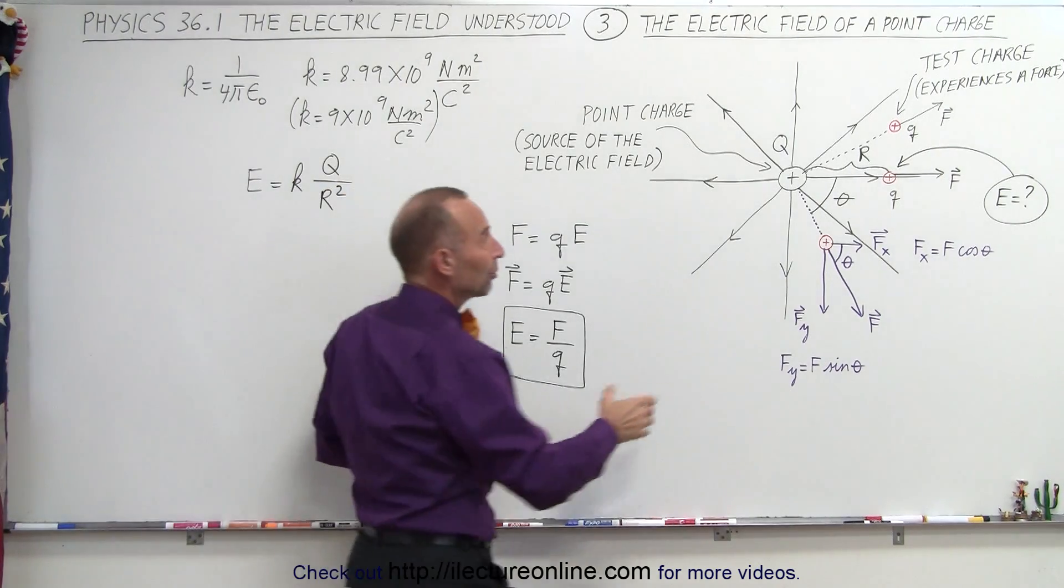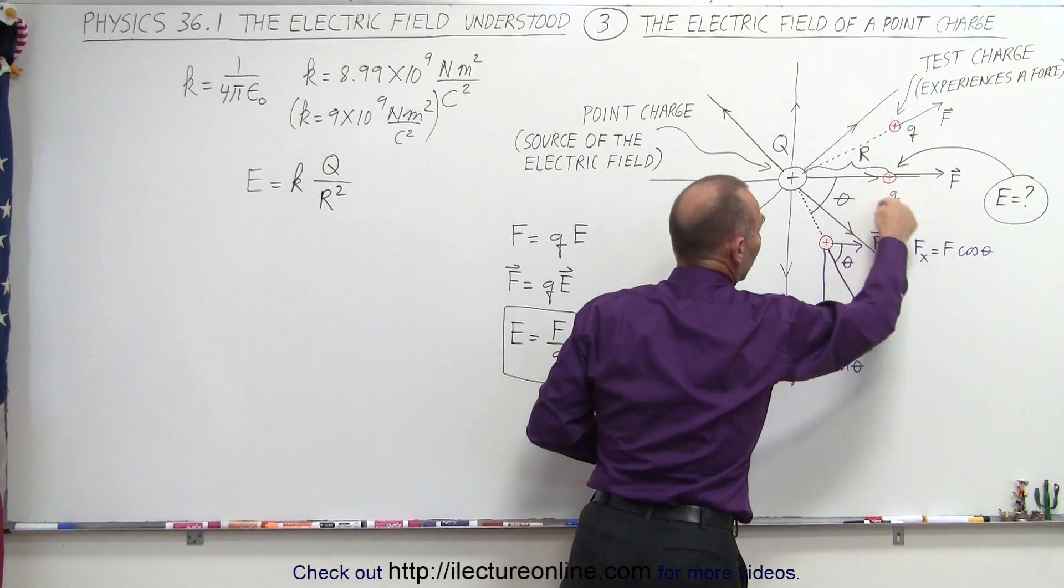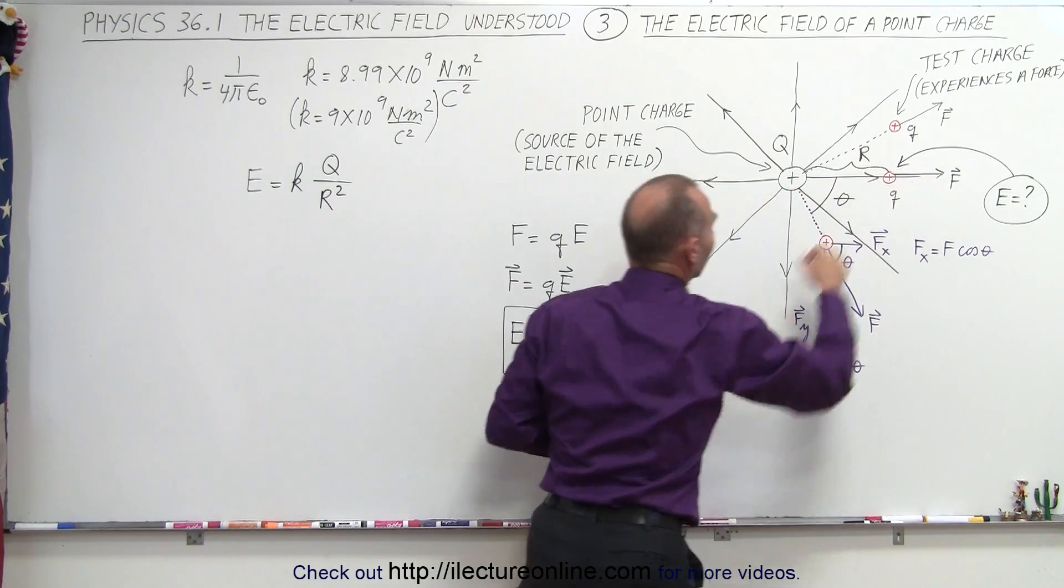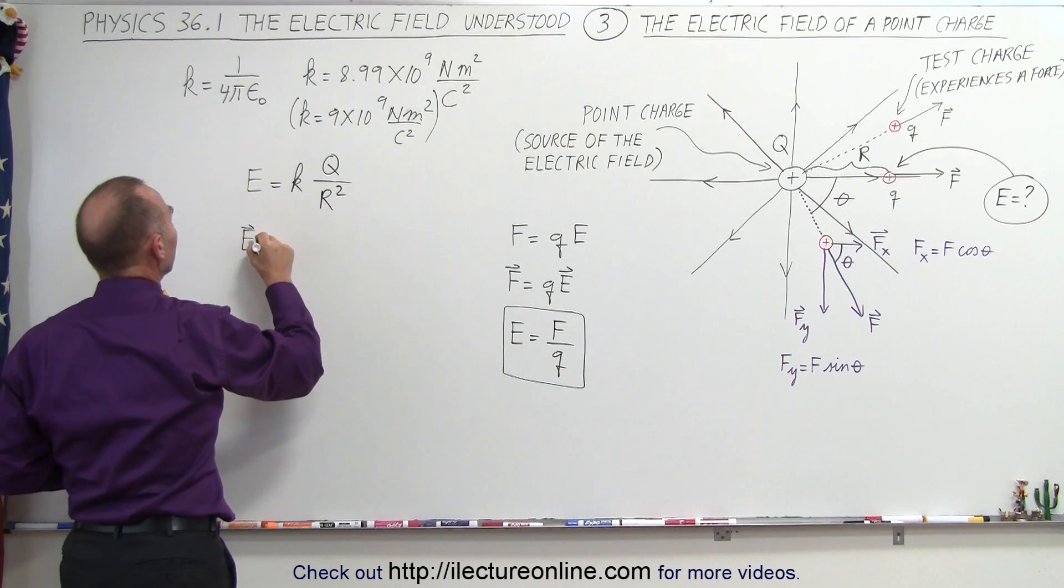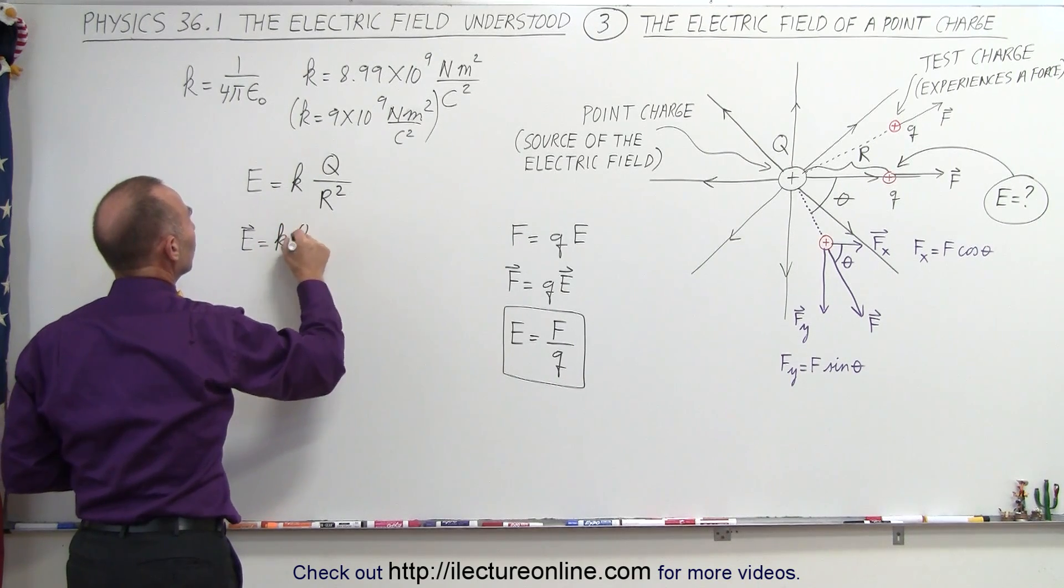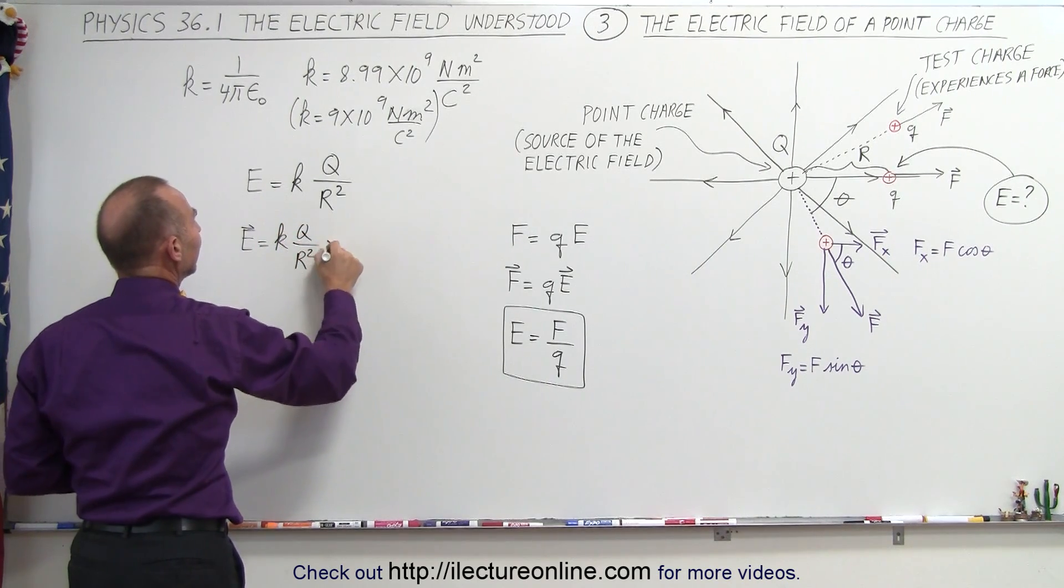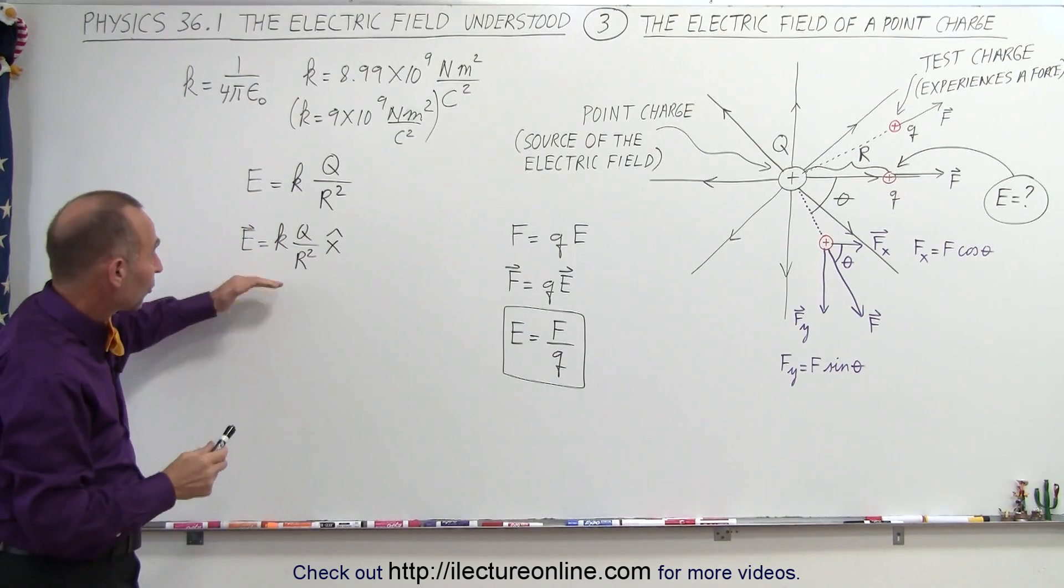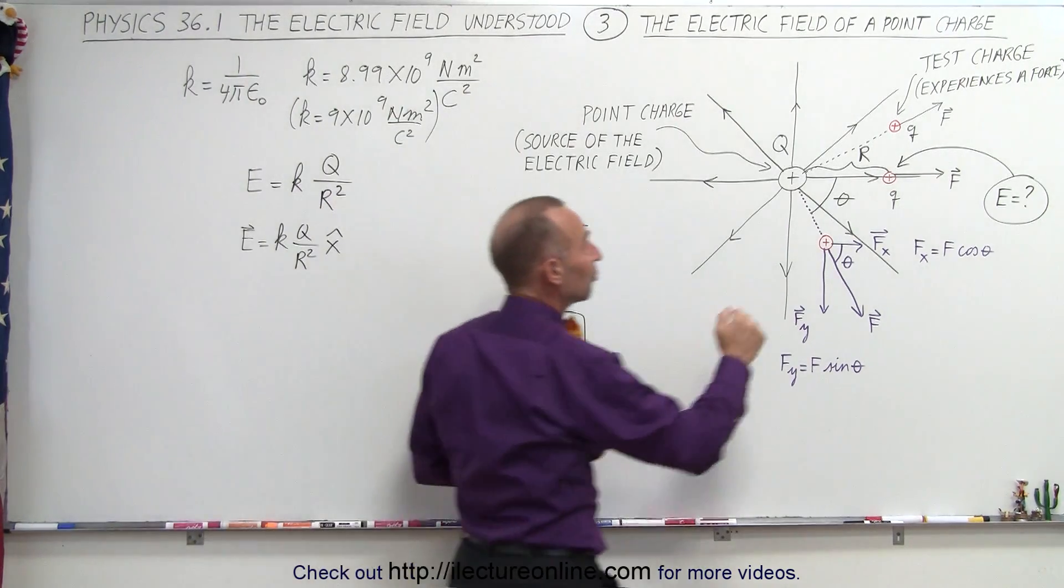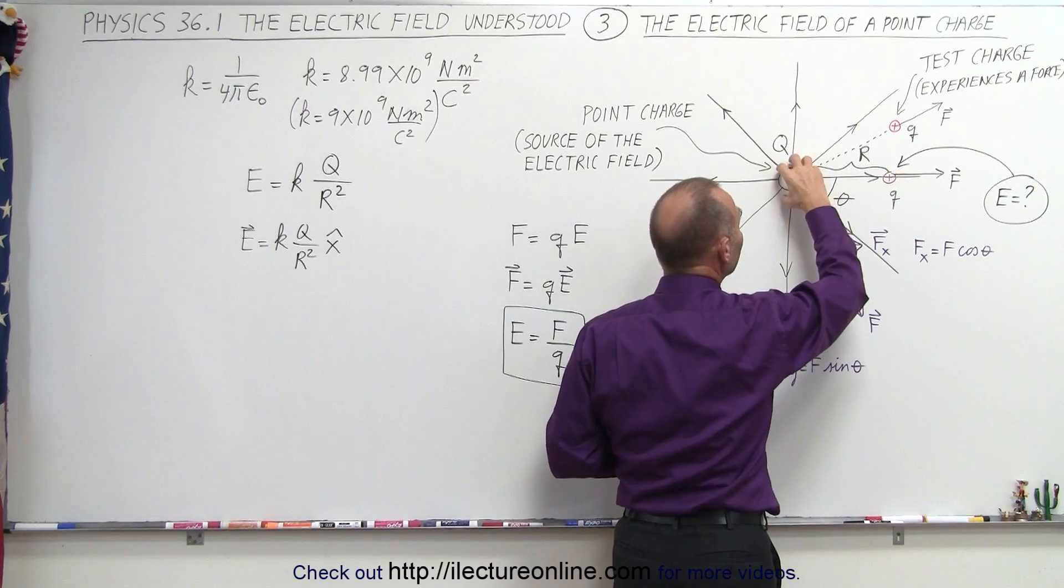If you want to write it in terms of direction, and we're using this test charge right here which is right there on the x-axis, then you can say in this case, E, the electric field, is equal to k times q divided by r squared in the positive x direction. However, that only works if the test charge is placed right to the right of the source charge.